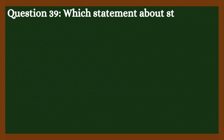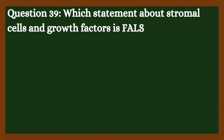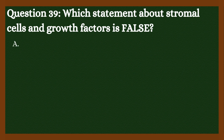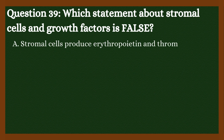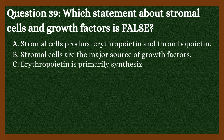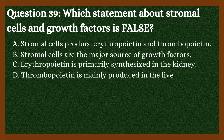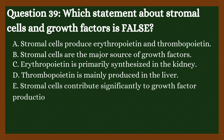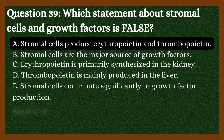Question 39: Which statement about stromal cells and growth factors is false? A. Stromal cells produce erythropoietin and thrombopoietin. B. Stromal cells are the major source of growth factors. C. Erythropoietin is primarily synthesized in the kidney. D. Thrombopoietin is mainly produced in the liver. E. Stromal cells contribute significantly to growth factor production. Answer is A. Stromal cells produce erythropoietin and thrombopoietin.